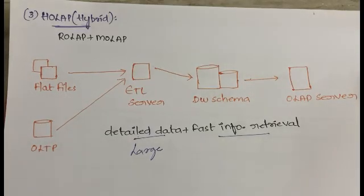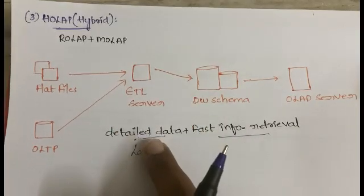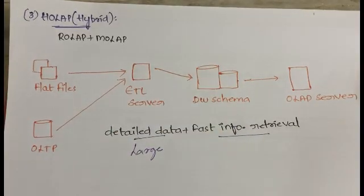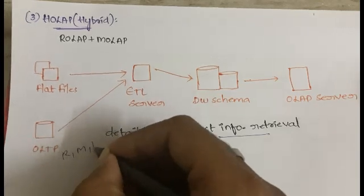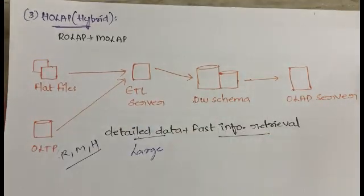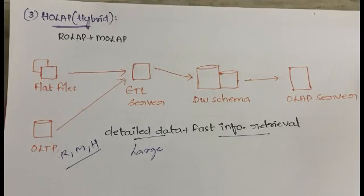Because HOLAP is a hybrid of both relational and multi-dimensional, you can design it according to your needs and get the maximum advantages of both: large amount of data storage as well as fast information retrieval. In this video we discussed ROLAP, MOLAP, HOLAP, and briefly mentioned other types like Web, Desktop, and Mobile OLAP.